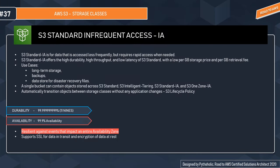S3 Standard Infrequent Access (Standard IA) is used for data that is infrequently accessed, like log records. It offers high durability, high throughput, and low latency — just like S3 Standard — with a lower per-GB storage price but a per-GB retrieval fee. Use cases include long-term storage, backups, and disaster recovery. It is designed for 11 nines durability across multiple availability zones and 99.9% availability over a given year.